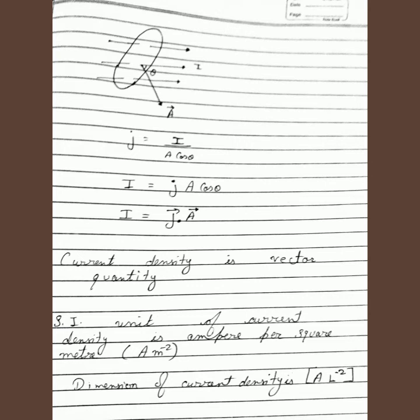Since current density is a vector quantity, its SI unit is ampere per meter squared (A/m²). The dimension of current density is A¹ L⁻².